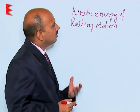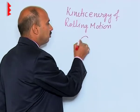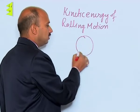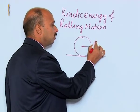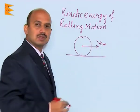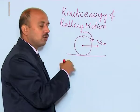Because there is no relative motion between the point of contact and the surface. So now, let us discuss what is the kinetic energy of a body having rolling motion. Suppose a body is here which is having rolling motion without slipping.